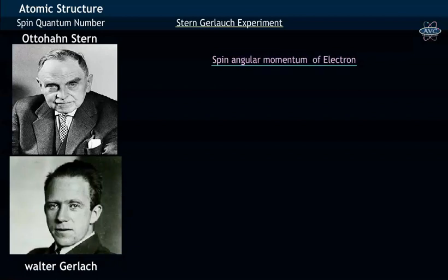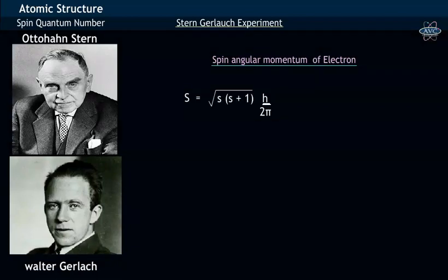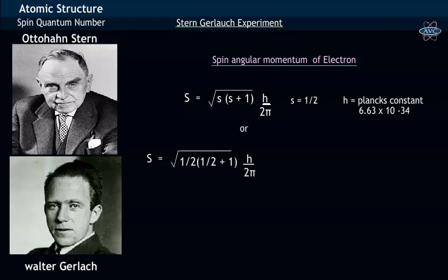The spin angular momentum of an electron is given by the formula square root of S into S plus 1, h by 2π. Here S has value of half, while h is the Planck's constant.